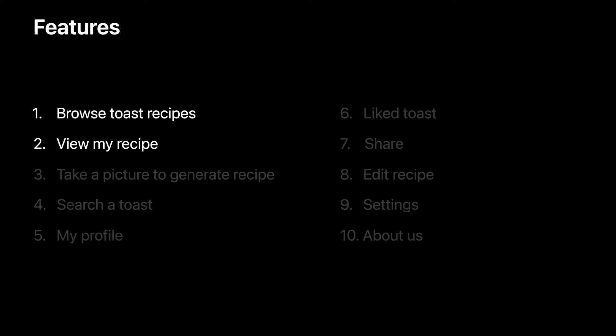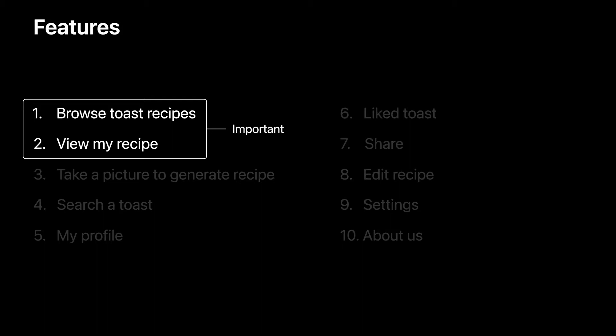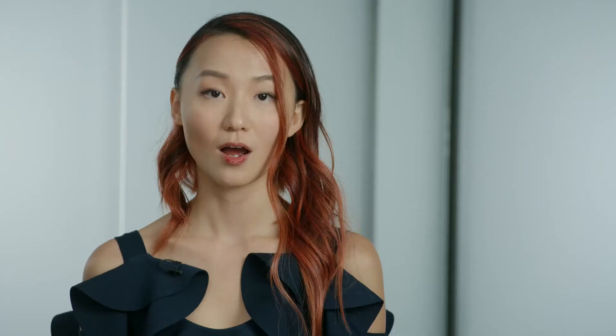We ordered our list of features by their level of importance. Browsing toast recipes and viewing my recipes are very important for people to see. Settings and About Us are less critical — especially the About Us page. A person using your app might want to know the developer to report a problem or make a suggestion, but it's not one of the top three things they want to do. When designing your app, try to understand what is important from your user's perspective.